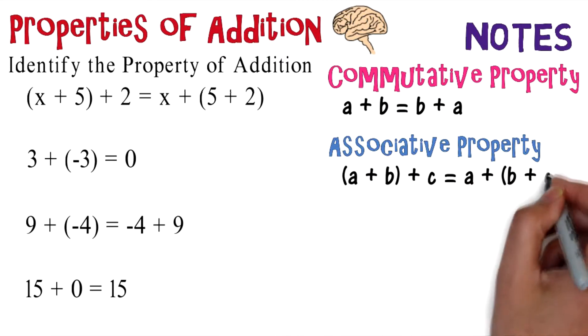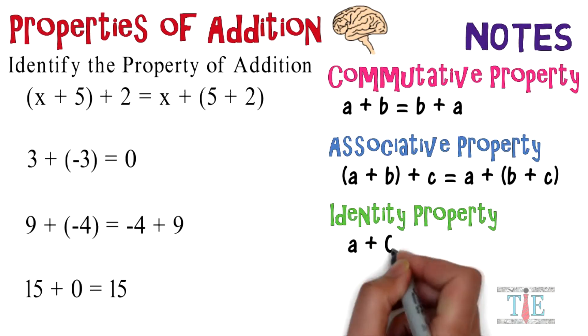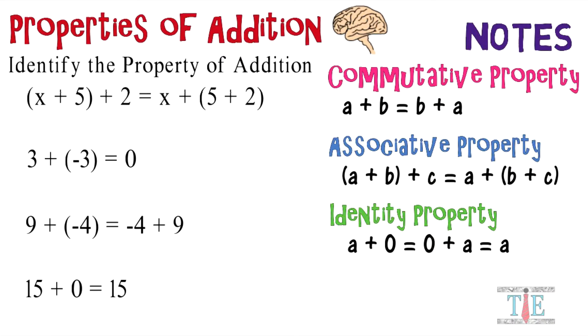a + (b + c). Next property will be the identity property: a + 0 = 0 + a = a. Last up, you have the inverse property: a + (-a) = -a + a = 0. So let's match these up. If you look at the